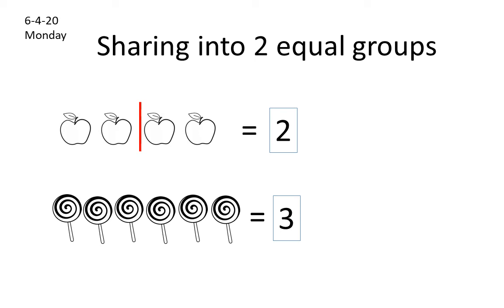So you will get the answer two. And next one: six lollipops are there. We have to divide into two equal groups. How can we divide? Draw one line. That means three — each one will get three and three.